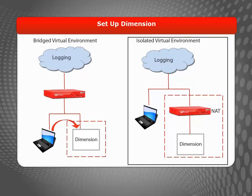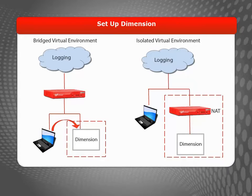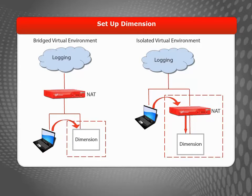In this case, you'll almost certainly need to apply a NAT rule to the management connection between your workstation and the Dimension Virtual Machine, as well as to any management connections you've allowed from outside your network. You may also need to apply NAT to the WatchGuard logging connections between your remote Firebox or XTM devices and Dimension.